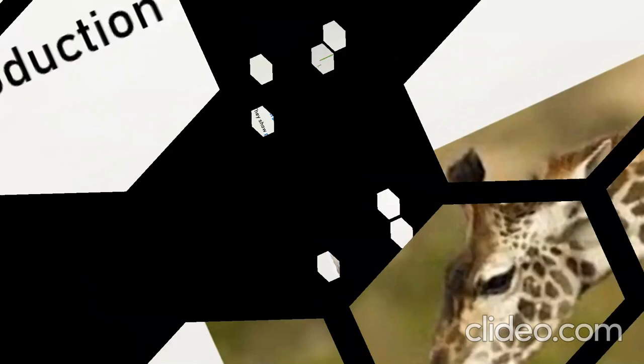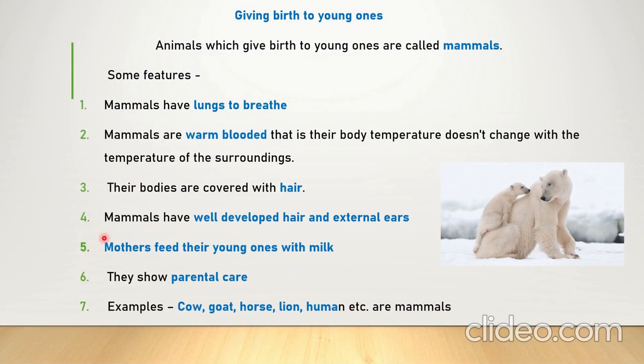Animals which give birth to young ones are called mammals. So humans, polar bears, whales, lions, horses, and cows all give birth, and they are all mammals. There are many different types of mammals.